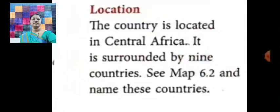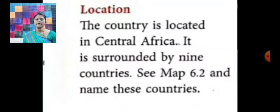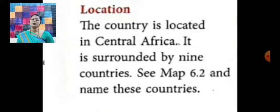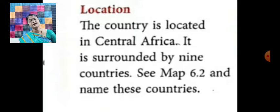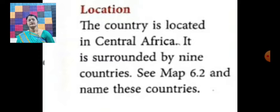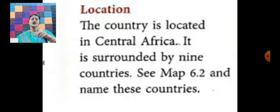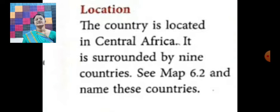Now let us discuss the location of the DRC — the Democratic Republic of the Congo. The country is located in central Africa. It is surrounded by 9 countries. See map 6.2 and name these countries yourself.